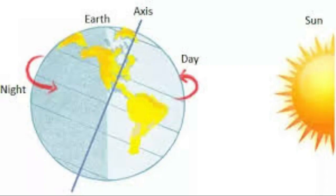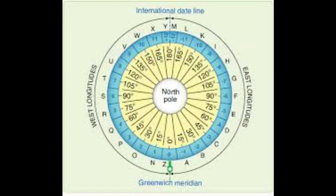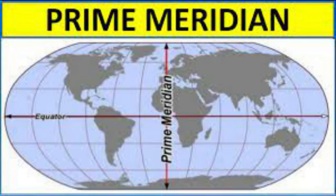Some important facts you need to know: the sun rises in the east and sets in the west. Therefore, places to the east of Greenwich see the sun first and are therefore further ahead in time, while places in the west see the sun later and are therefore behind in time. Fact number two: every 15 degrees of longitude represents one hour. Fact number three: one degree of longitude equals four minutes. The prime meridian of Greenwich is always at zero degrees.